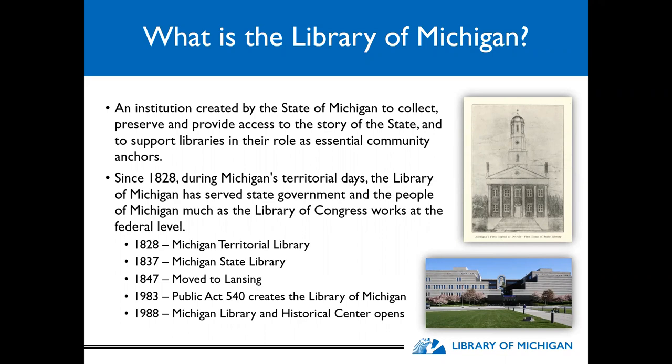We've been around since 1828, starting as a territorial library. In 1837, when Michigan became a state, we transitioned to being called the Michigan State Library. We moved from Detroit to Lansing in 1847 when the state capital moved to the middle of the state, and we existed in several different locations within the city of Lansing itself, primarily in the state capital buildings and a few other different buildings.